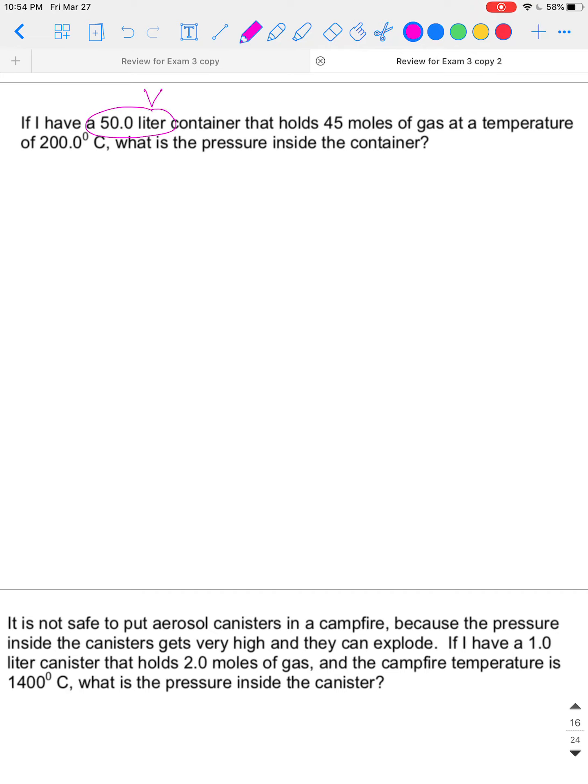The first thing I see is 50 liters. That is a volume. Then we have moles. This is N, number of moles. We have a temperature. This is T, and it's asking for pressure, and we always know R. R is memorized. So the only variables we have here match P, V, N, R, and T. So this is a PV equals NRT problem. This is an ideal gas law.